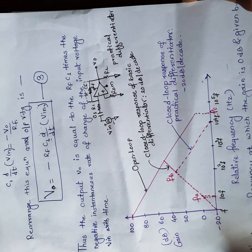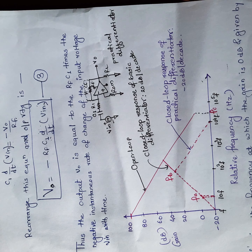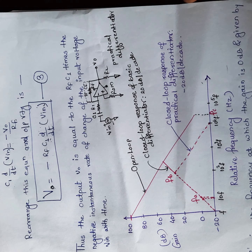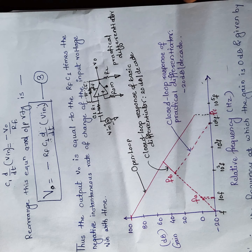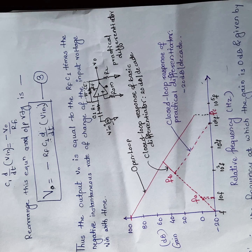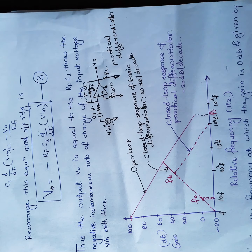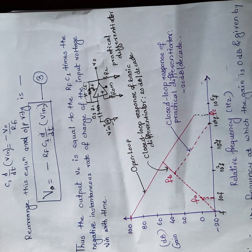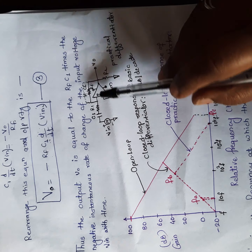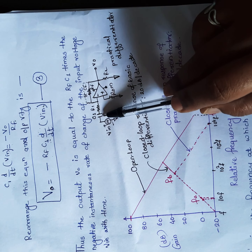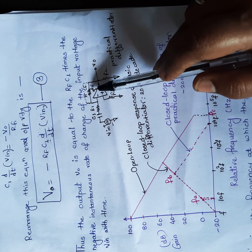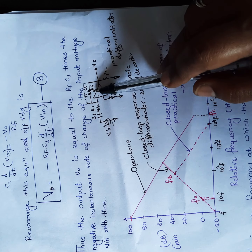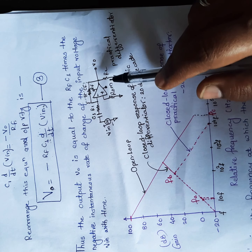For the closed-loop response, to make the differentiator work properly and provide a stable, high-frequency noise-removing circuit, we need to make some changes — adding components R1 and a feedback capacitor Cf. With these additions, both stability and high-frequency noise problems can be corrected. R1 is placed in series with capacitor C1, and feedback capacitor Cf is connected in parallel with feedback resistor Rf. This is the practical differentiator circuit.